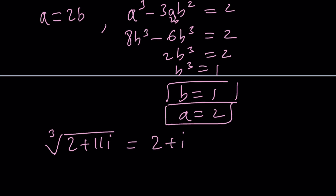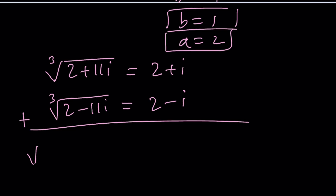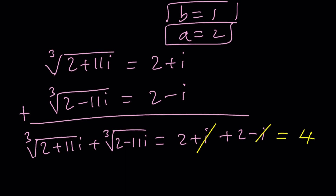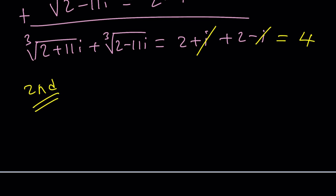Since (2 + 11i) and (2 − 11i) are complex conjugates, their principal cube roots are also conjugates. So the cube root of (2 − 11i) is 2 − i. Adding them together: (2 + i) + (2 − i) = 4. The i's cancel and we get the real answer: 4.